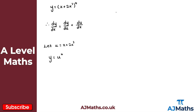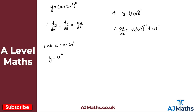Now we can generalize this result. If y equals f(x) all to the power of n, then dy/dx is given as n multiplied by f(x) to the power of n minus 1, and then we multiply this by the derivative of f(x), which is f'(x). So you bring the power down, multiply by f(x) with the power reduced by 1, and then multiply all of that by f'(x). And that's the chain rule.